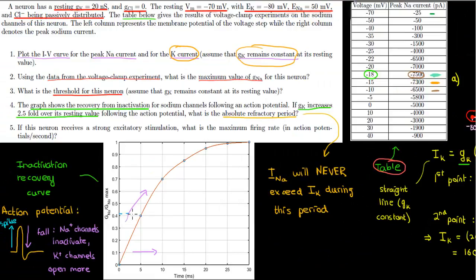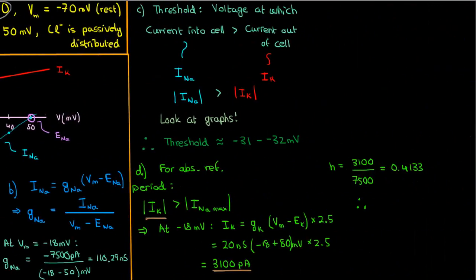Looking at the inactivation graph, around 5 milliseconds after the action potential, enough sodium channels have recovered for the cell to begin firing action potentials again — it's actually about 5.1 milliseconds, but we approximate it as 5 milliseconds. Any sooner than 5 milliseconds, the sodium IV curve would be too scaled down to exceed the potassium current. Any longer, the sodium IV curve would be scaled up enough to exceed the potassium current. Therefore, the absolute refractory period is 5 milliseconds.